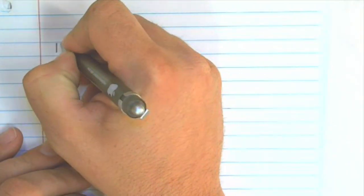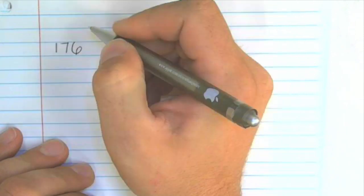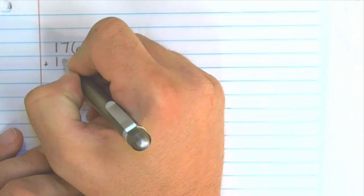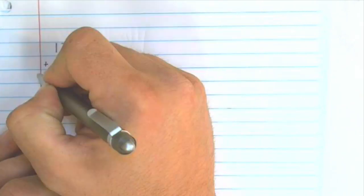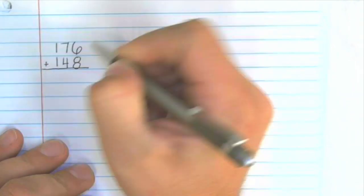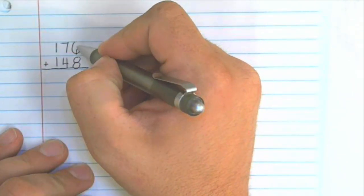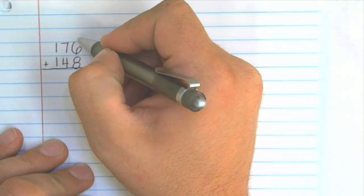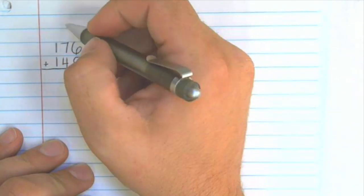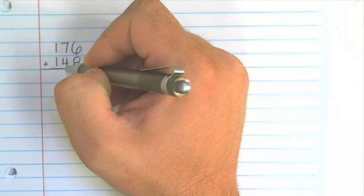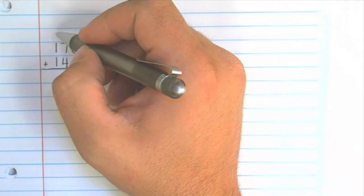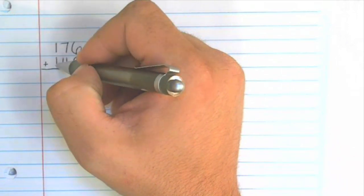Let's start with a three digit number, 176 plus 148. Notice how neatly I'm writing these numbers and I'm making sure that the numbers in the ones column are lined up vertically. The numbers or the digits in the tens column are lined up vertically and the digits in the hundreds column are lined up vertically.